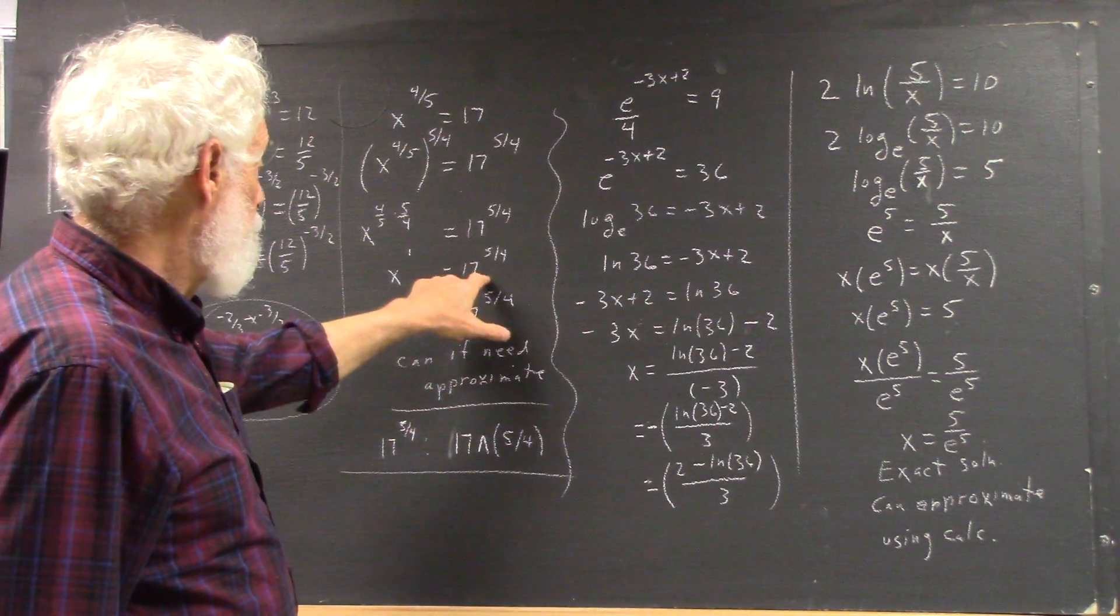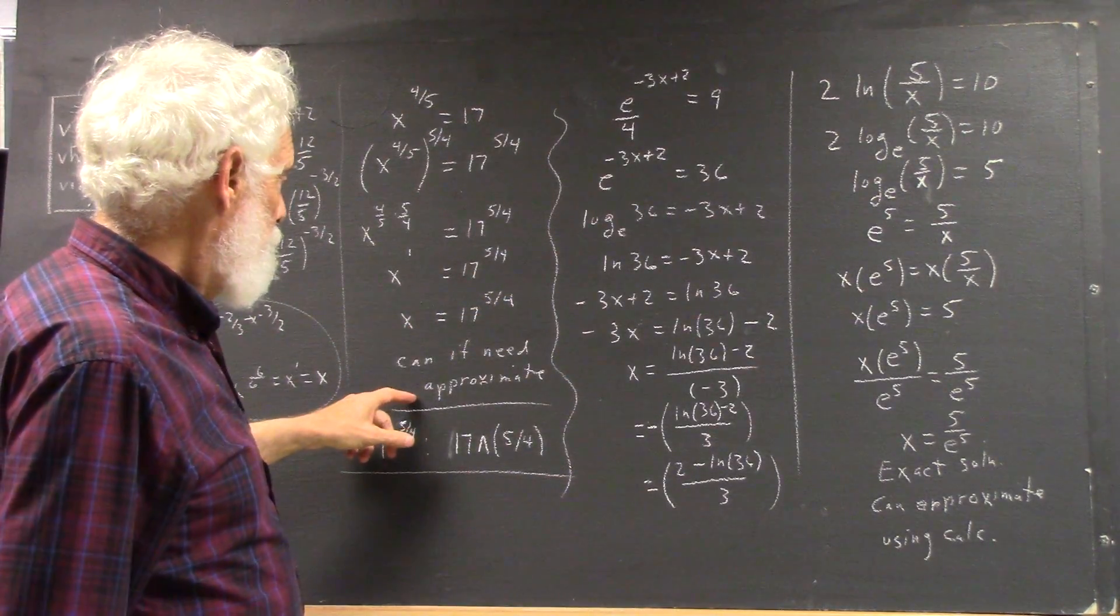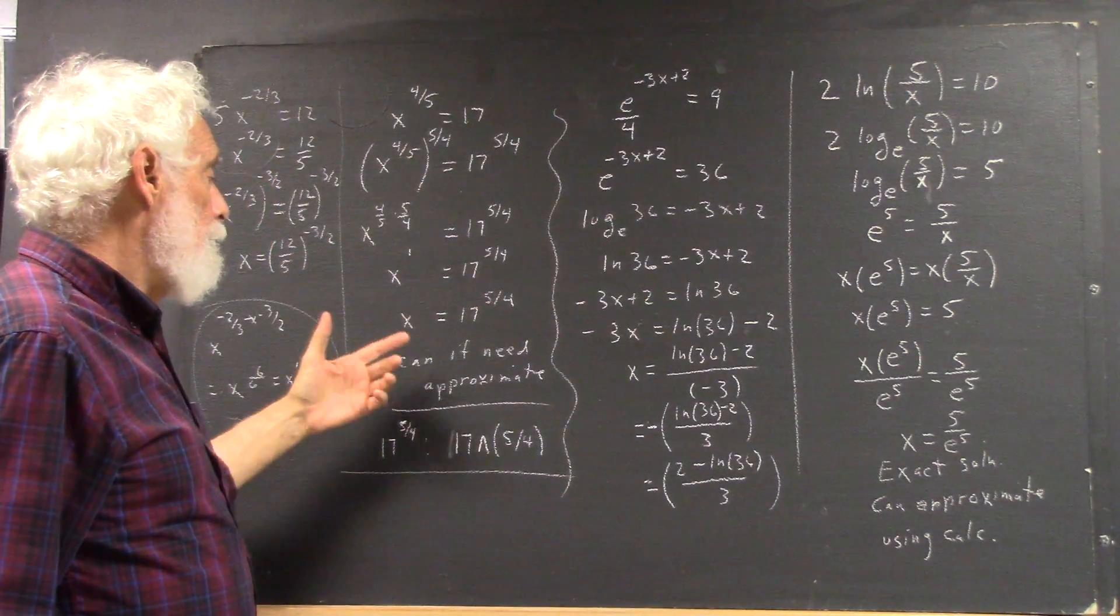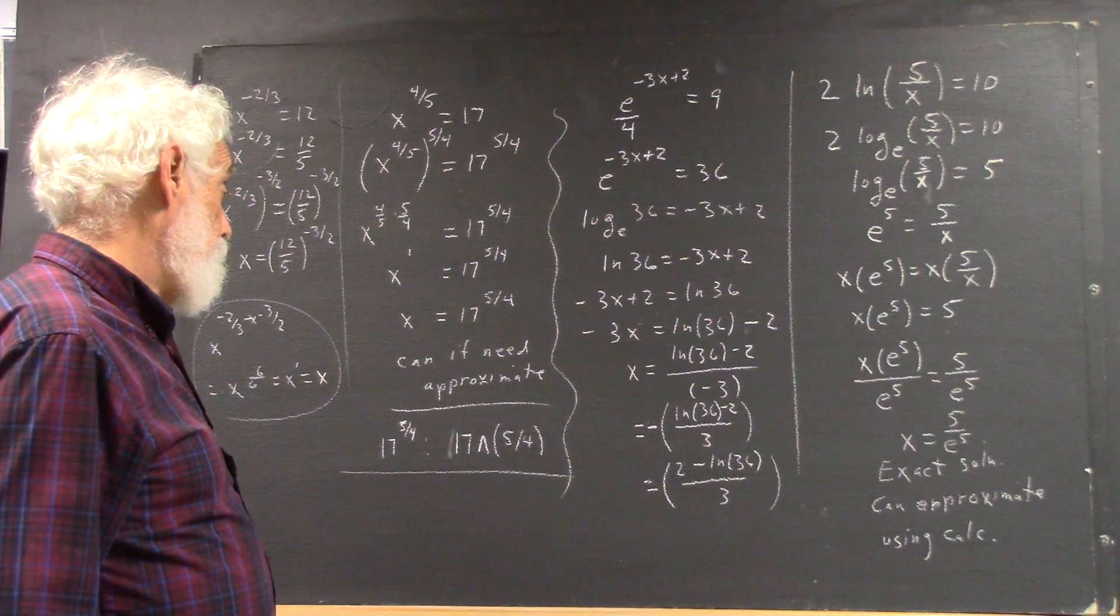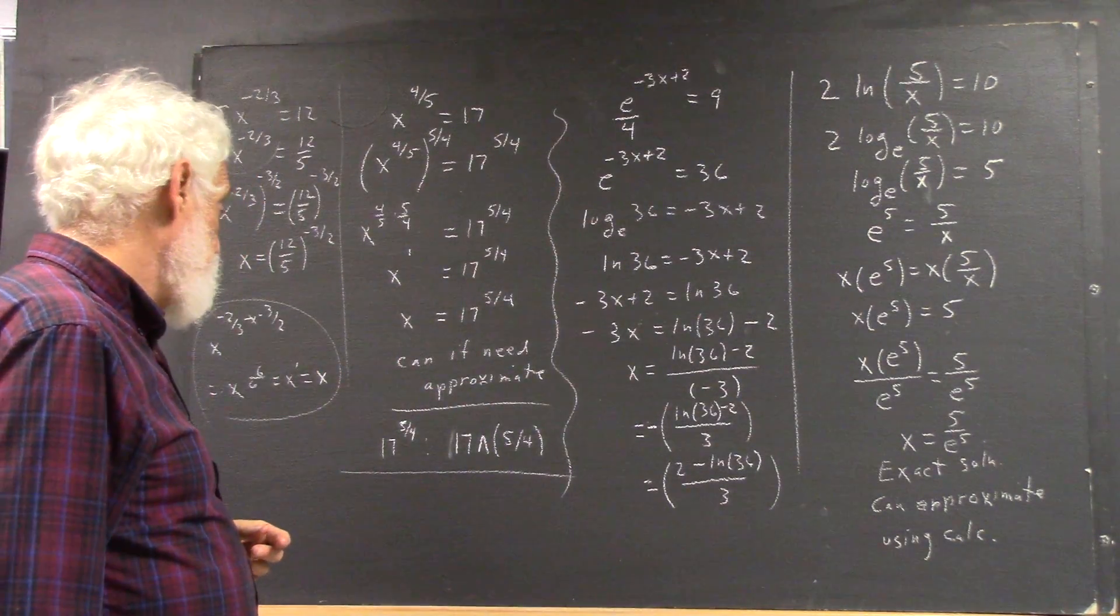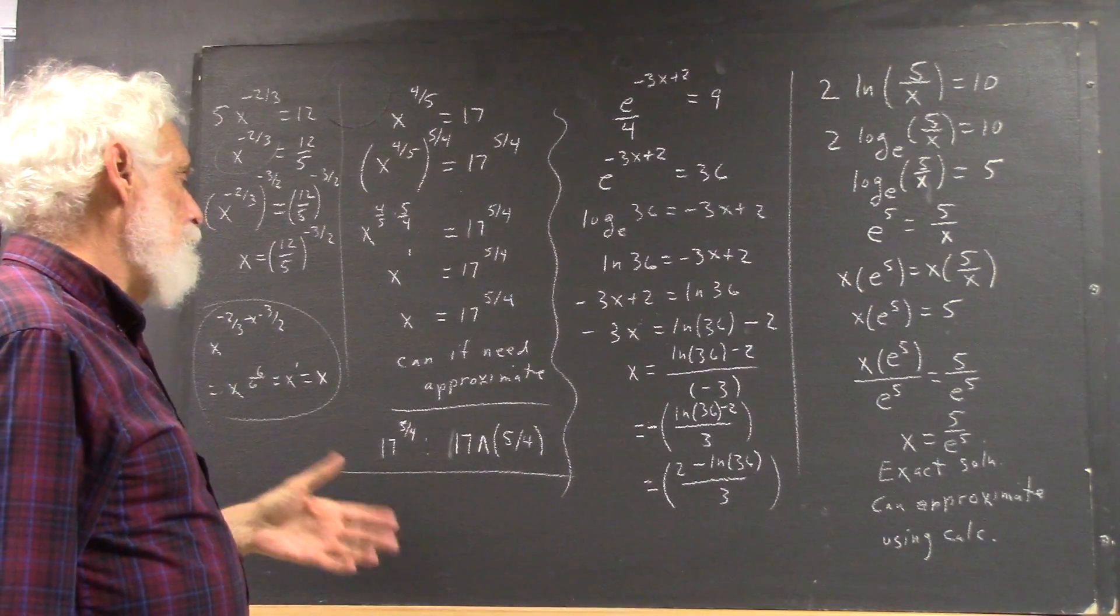So x is 17 to the 5/4, and that can, if needed, be approximated. The way we would key that into a calculator—there are various ways.